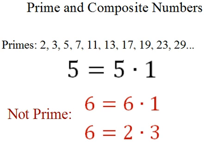6 is not prime because it has factors other than 6 and 1, such as 2 and 3. In fact, 6 is a composite number, meaning it's made up of other prime numbers and has factors other than 1 and itself.